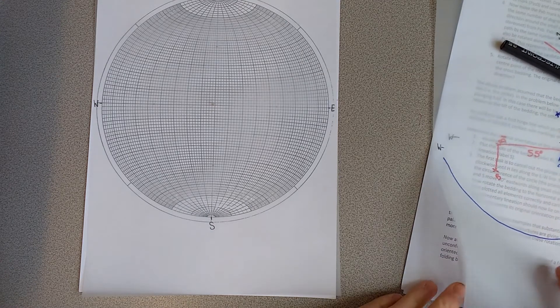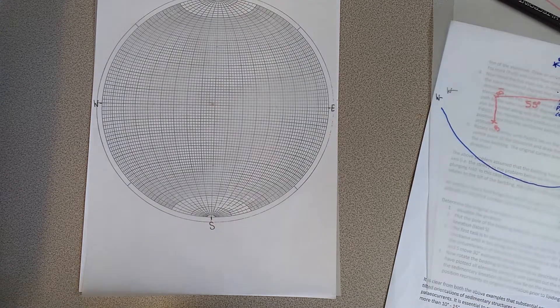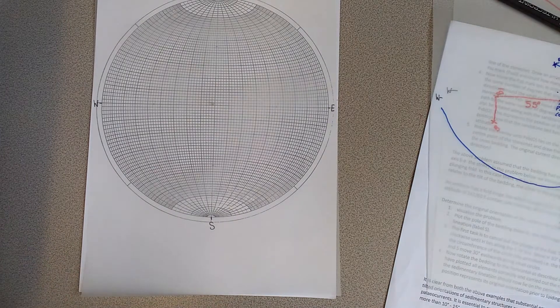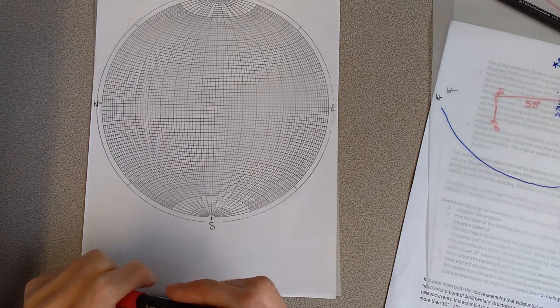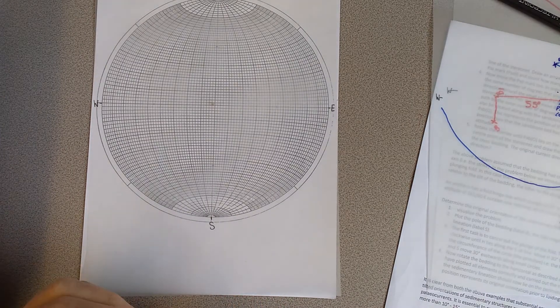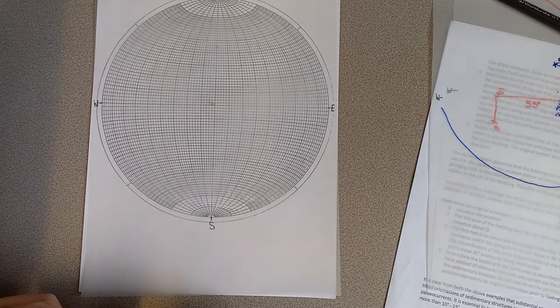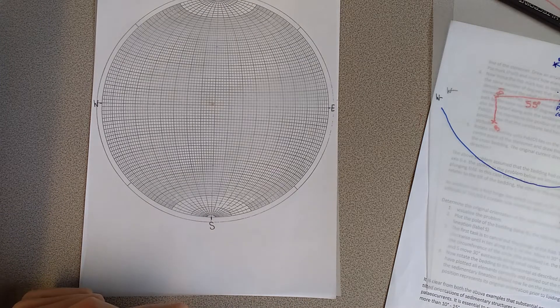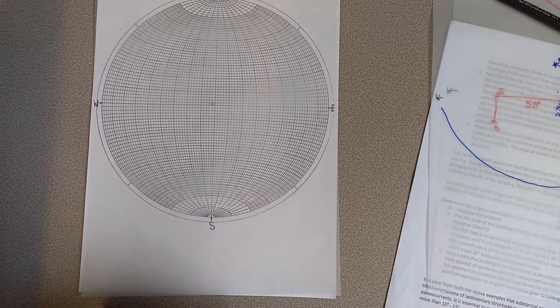In the final part, I'm going to look at the last part of the exercise, which discusses opposite limbs of a fold developed beneath a plane of unconformity now oriented 132, 20 degrees southwest. The following observations can be made.